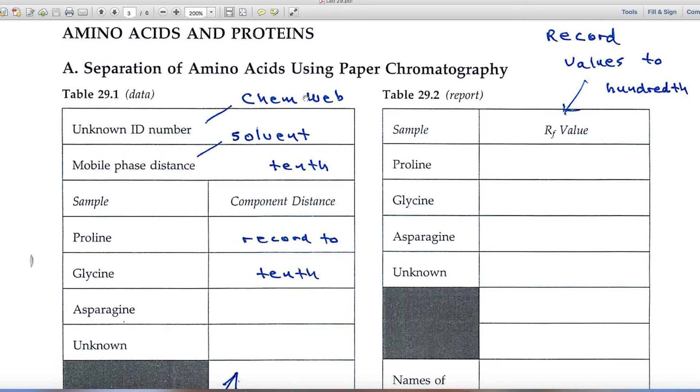The very first thing that's asked for here is the unknown ID number. Remember that you'll get that when you enter ChemWeb. It's a unique four-digit number that only you have. You're welcome to work with other students on the experiments, but when it comes to reporting the data, remember to use your own data because it might be unique to that unknown number.